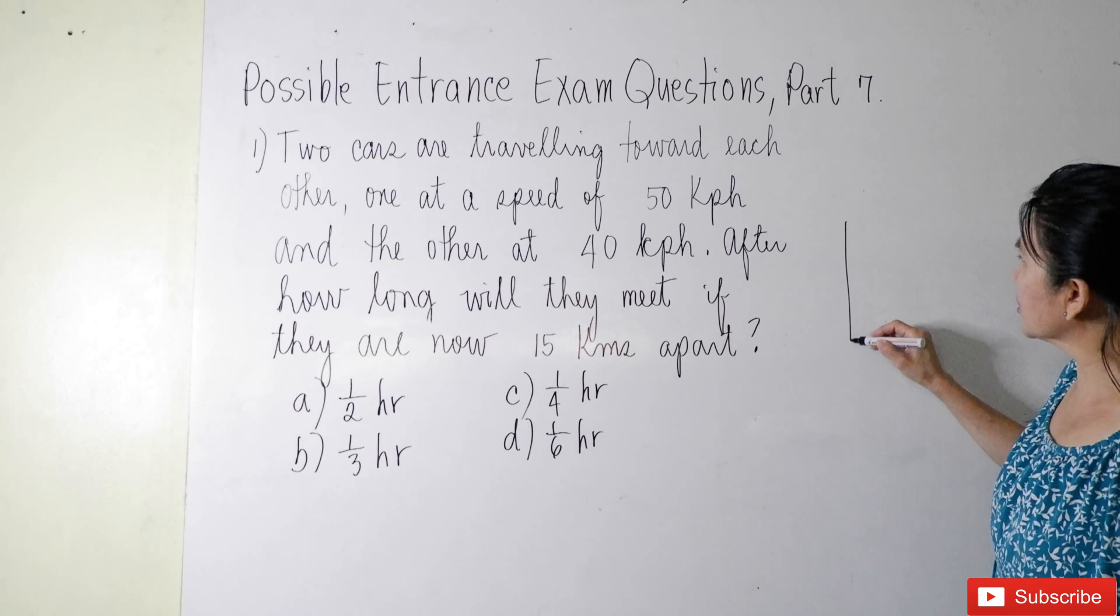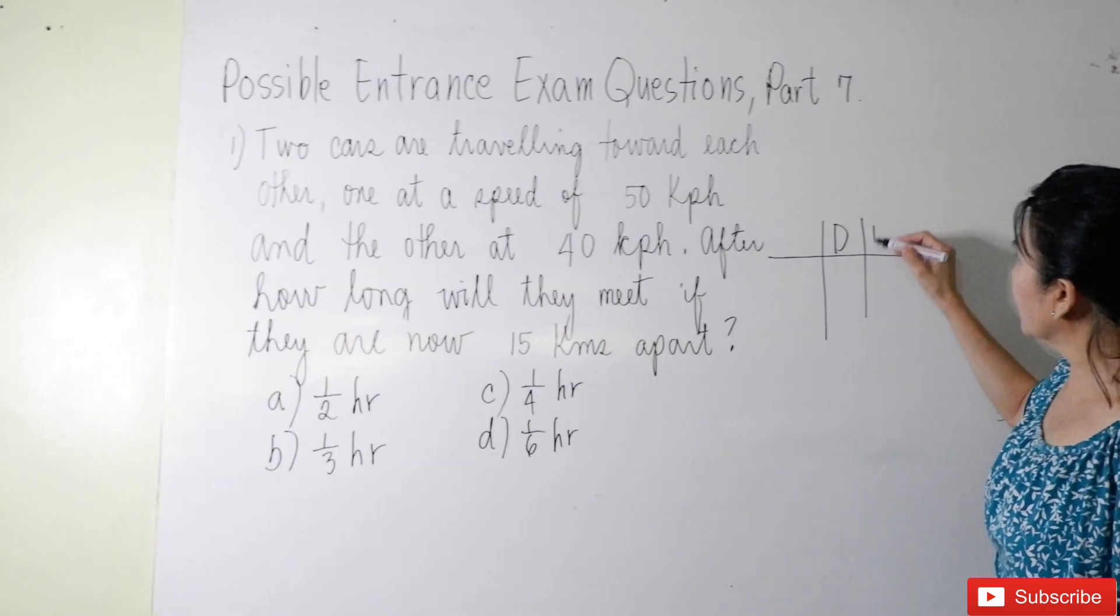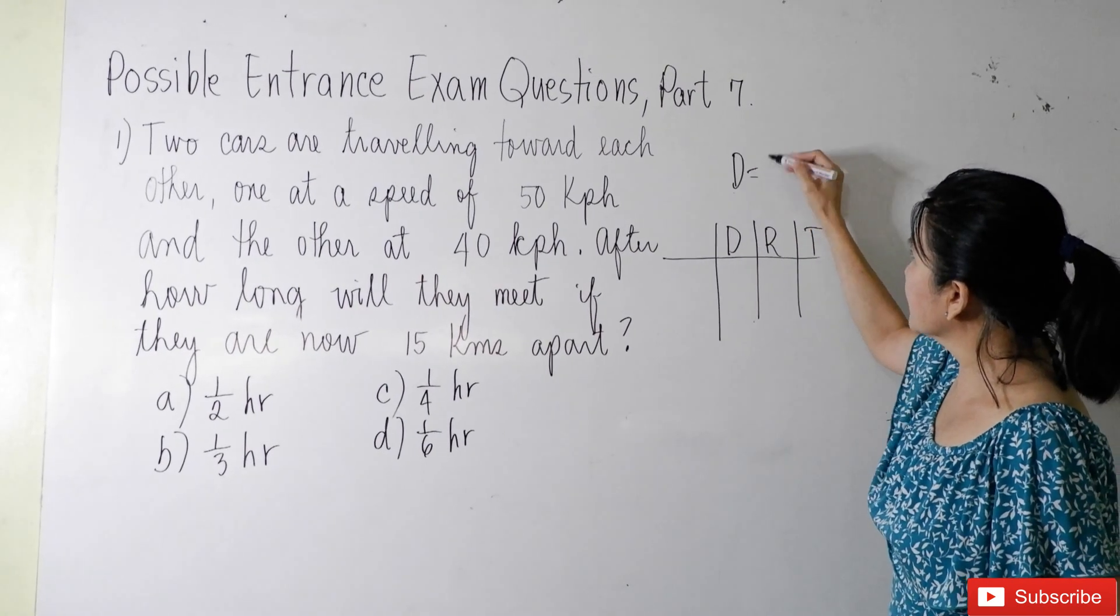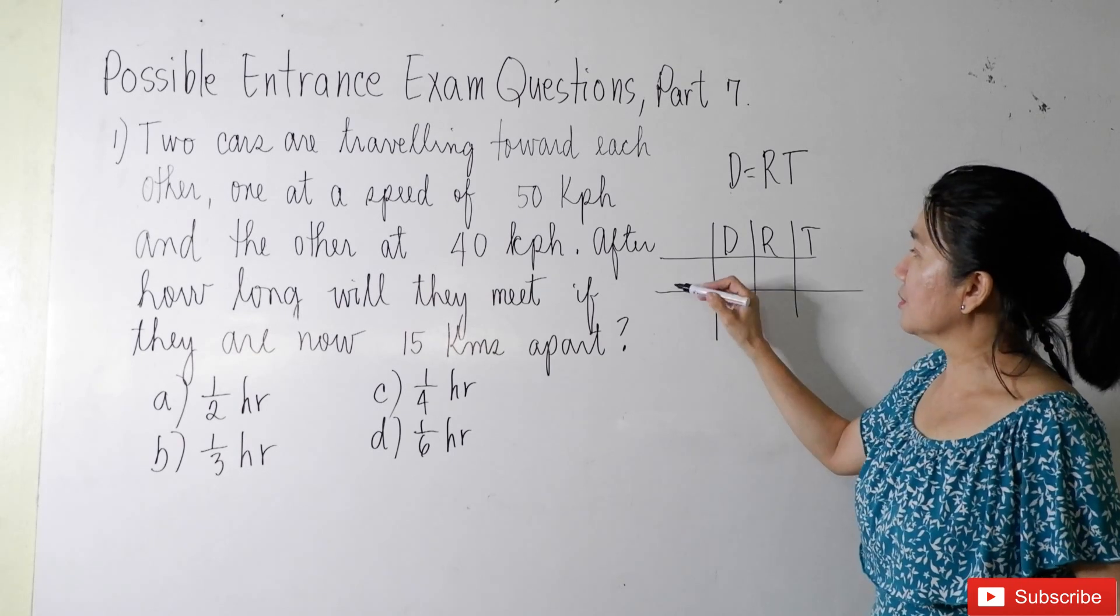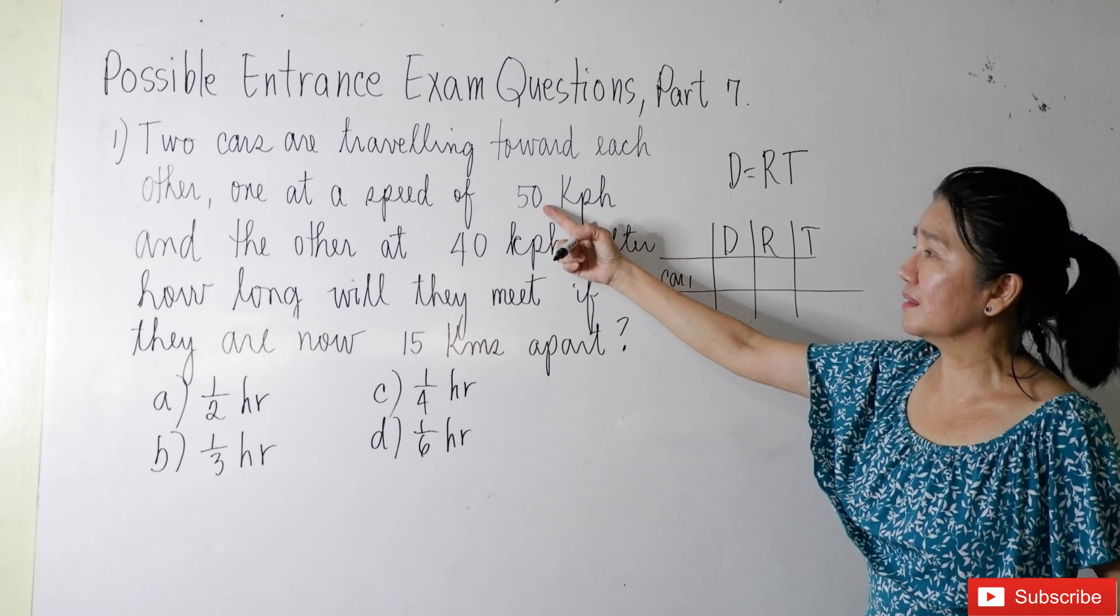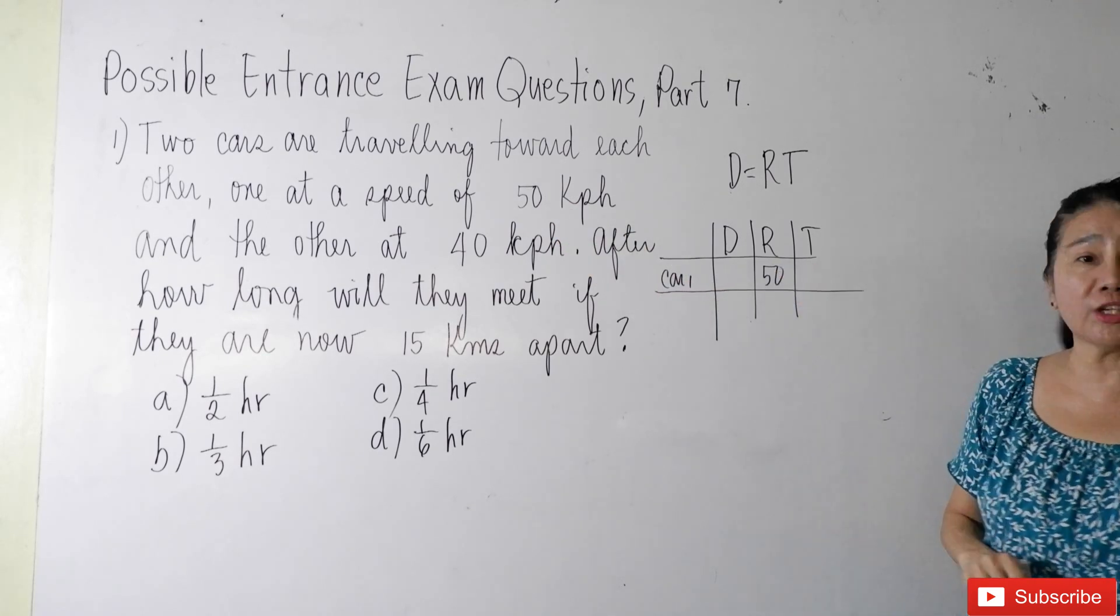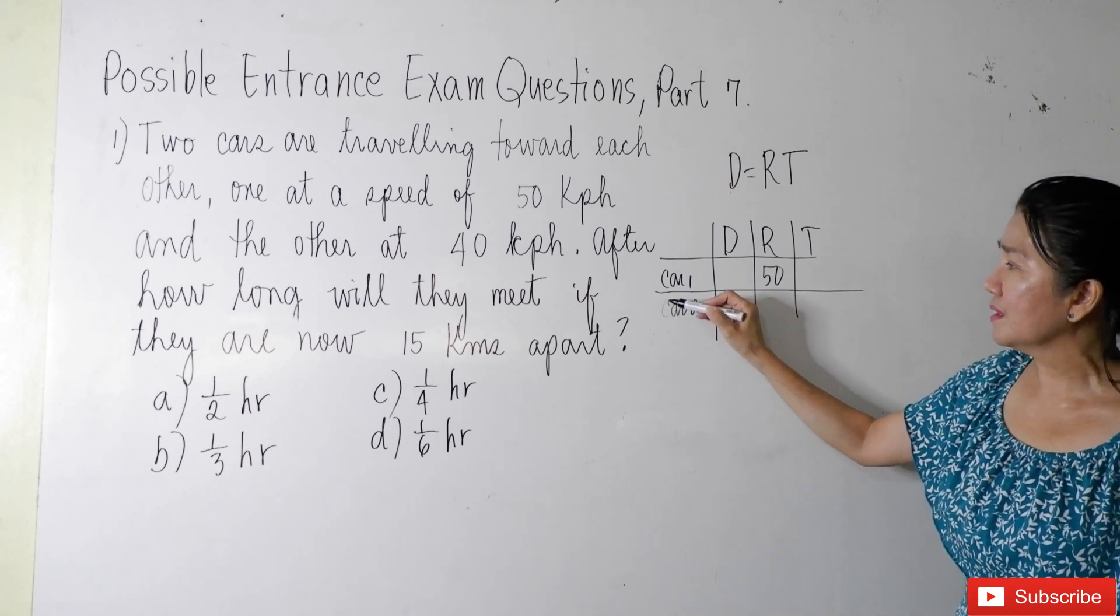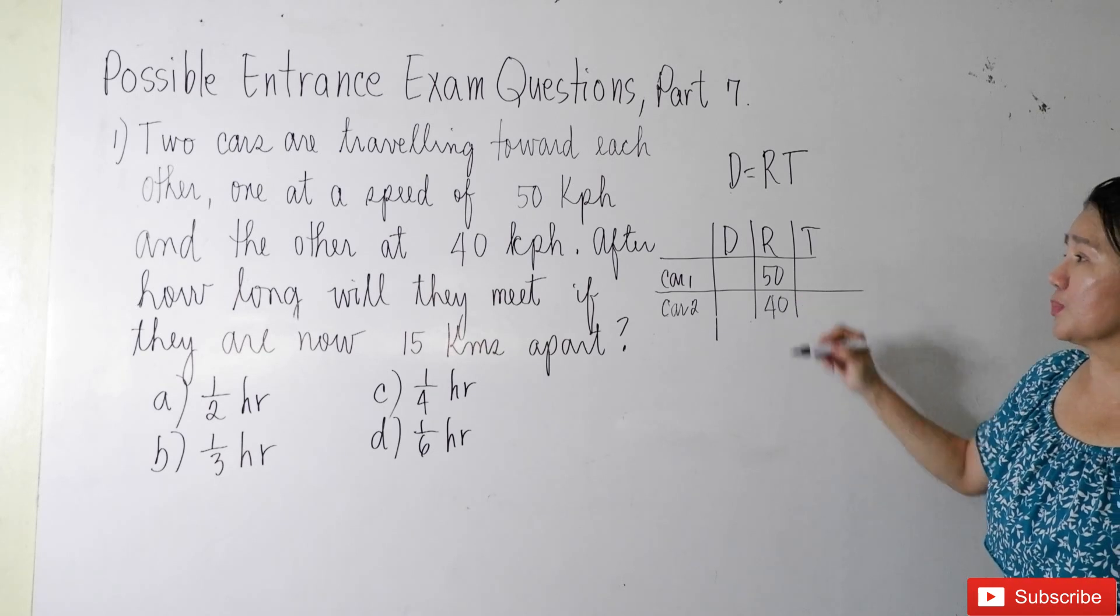Normally, you students will come up with a table: D, R, T. Remember, distance is rate times time. Okay? So, part 1 says that it is traveling at a speed of 50 kph, or kilometers per hour. Part 2, based from the problem, is traveling at 40 kilometers per hour.